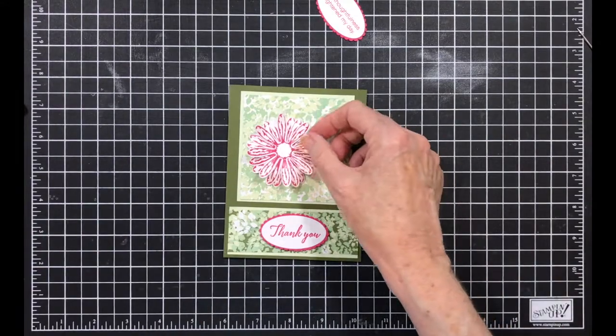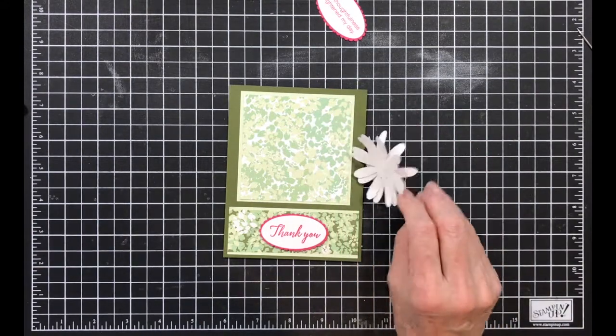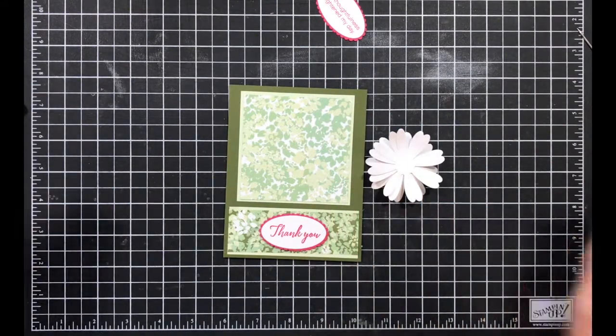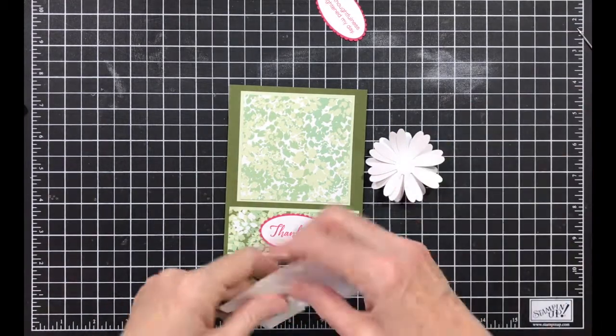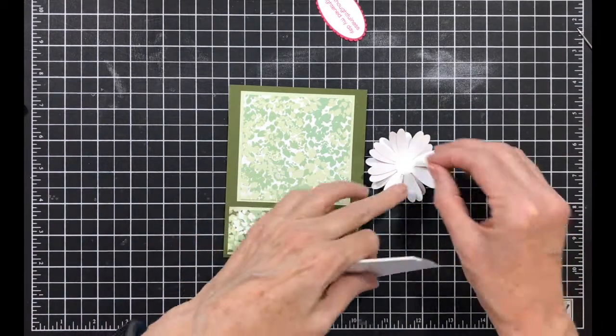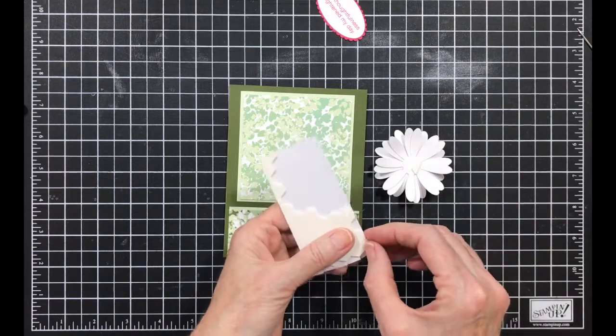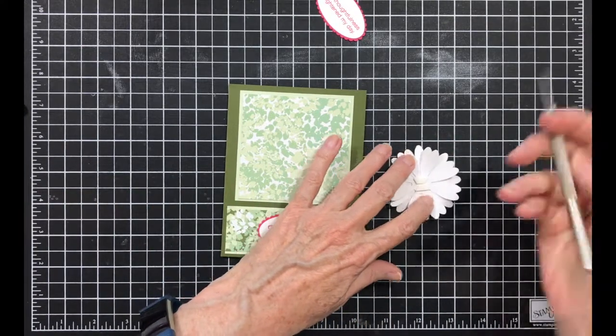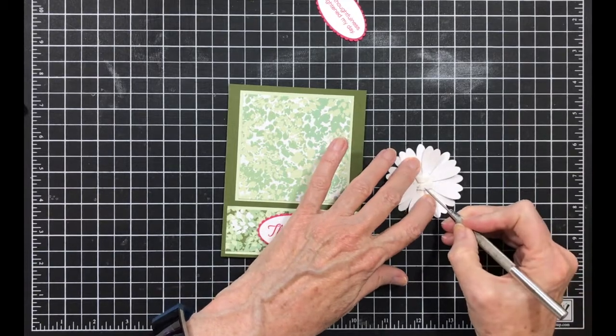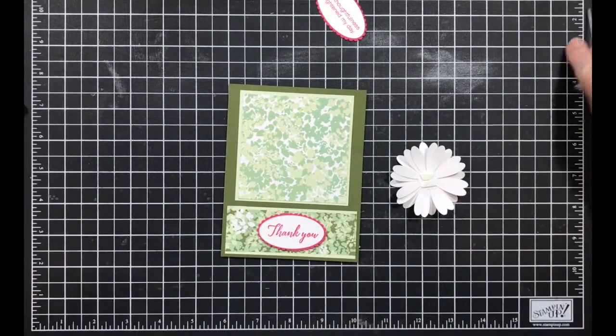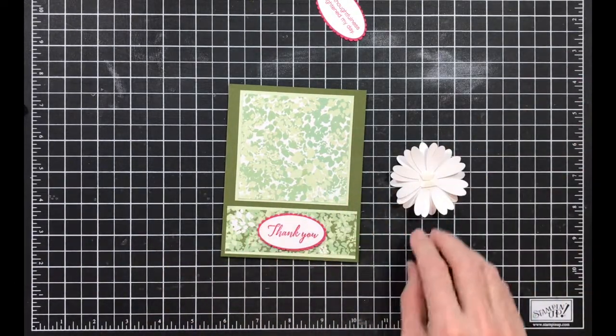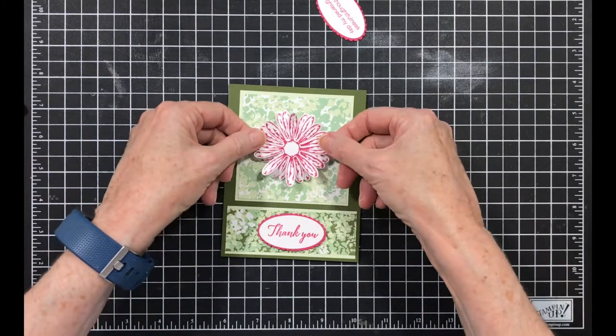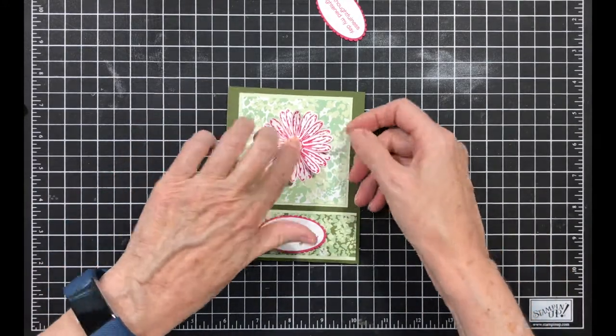And then this is going to go on here and I am going to use dimensionals. I have one here, and one here, and one here. And that is going to go in there like that.